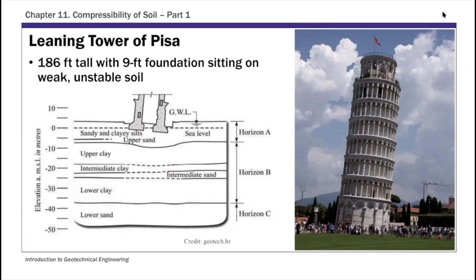If you look at this soil profile — this is a geological soil profile of the leaning tower — the tower is sitting on mostly fine sands and clayey soil. Most of them are fine-grained soils: clays and fine sands. The groundwater table is pretty high, close to the ground surface. That's actually a design flaw from the very beginning — the site selection is not ideal for a tall structure like this tower.